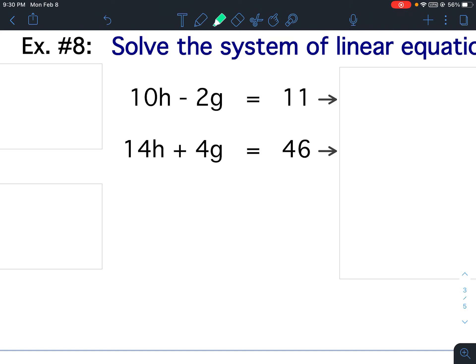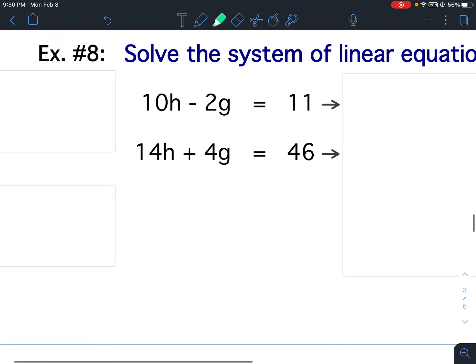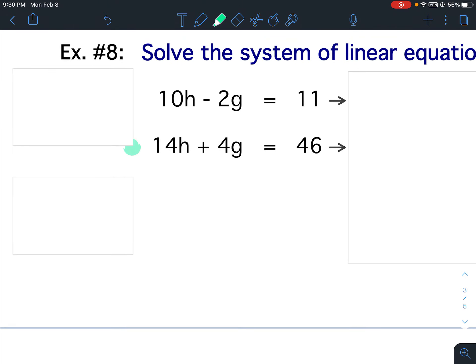Do we have multiples? Let's start. 14 divided by 10 does not divide out evenly. It would be 1.4, so 14 is not a multiple of 10. 4 divided by 2, however, is 2. Therefore, 4 is a multiple of 2. So we have the multiples negative 2g and 4g. So we have these multiples right here.